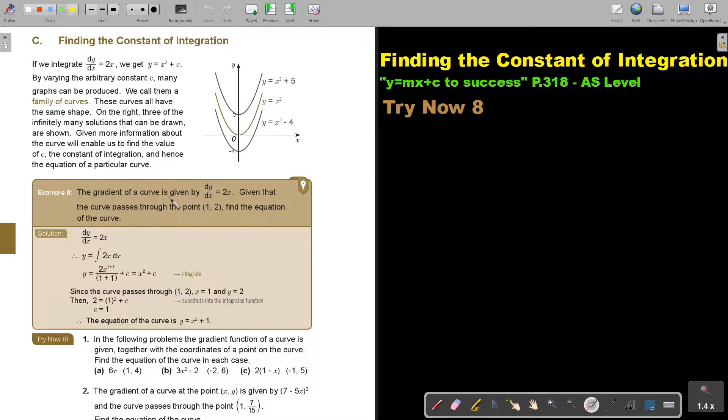The gradient of a curve is given by this derivative function, given that the curve passes through the point 1 and 2. So if we give extra information, we can find that value of c. Find the equation of the curve. First step, integrate.